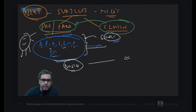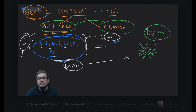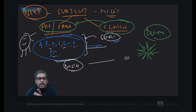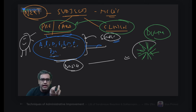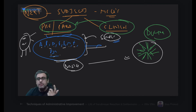In MBBS you are going to become one doctor only. All 19 subjects are interlinked - there's no separate subject, no fight about which is a good or bad subject. All subjects are preparing us to become doctors. So first go through first and second year subjects, and then you can proceed.